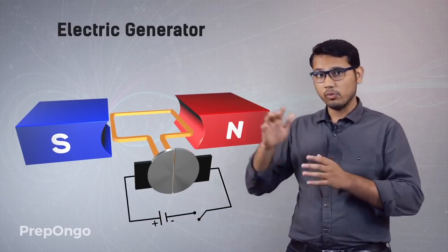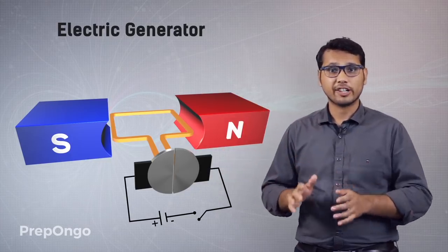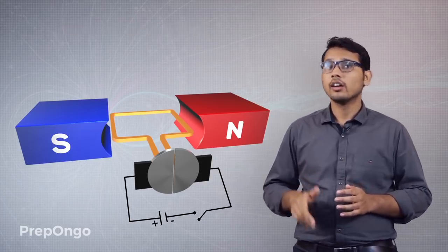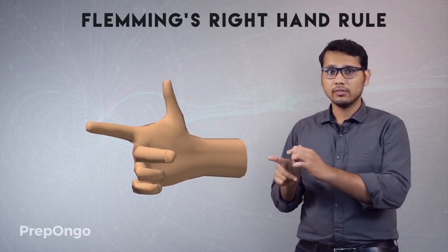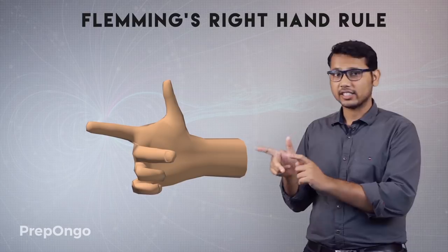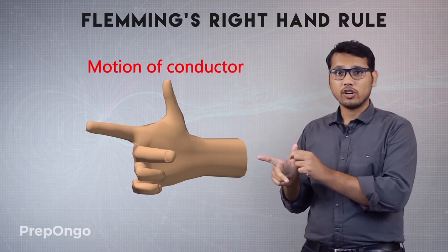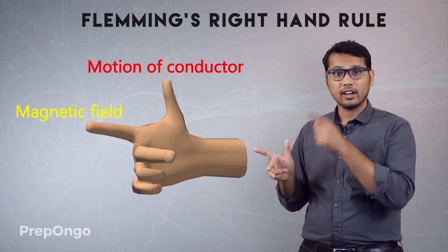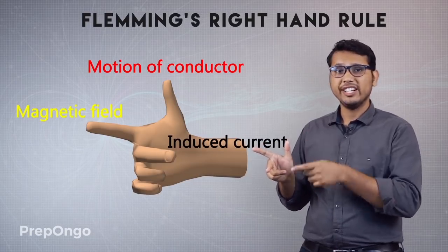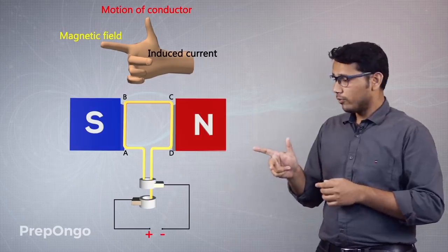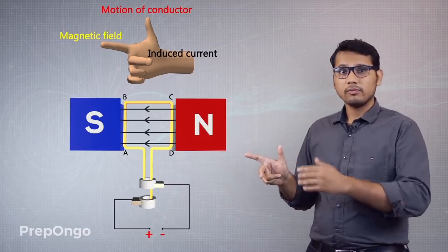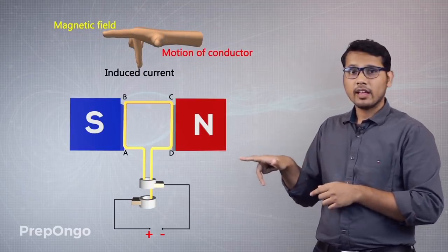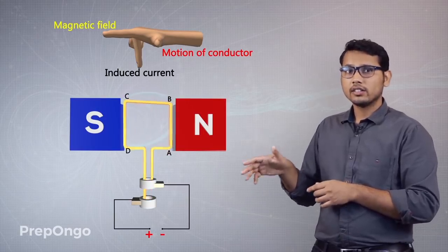Let's try to move the armature coil manually and find out the direction of induced current in it. To find the direction we use Fleming's Right Hand Rule. We stretch the thumb, forefinger, and second finger so that the thumb points in the direction of motion of the conductor, the forefinger points in the direction of the magnetic field, and the second finger gives us the direction of induced current. Magnetic field is always from north to south, so the forefinger points in that direction.